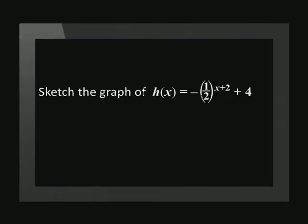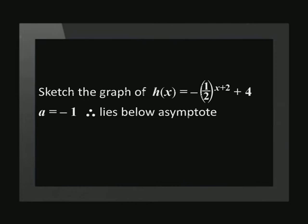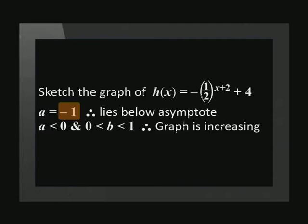Let's do one more together. Sketch the exponential graph h of x equals negative open bracket one-half closed bracket to the power of x plus 2 plus 4. Step one is to check where the graph lies in relation to the asymptote. The graph lies below the asymptote because the value of a in this equation is negative 1. With a equal to negative 1 and b equal to one-half, we see that the graph is increasing.